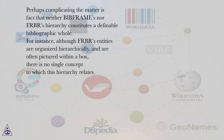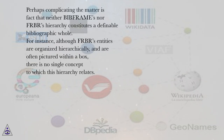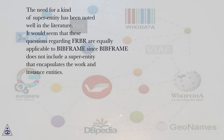Perhaps complicating the matter is the fact that neither BIBFRAME's nor FRBR's hierarchy constitutes a definable bibliographic whole. For instance, although FRBR's entities are organized hierarchically and are often pictured within a box, there is no single concept to which this hierarchy relates. The need for a kind of superentity has been noted well in the literature. It would seem that these questions regarding FRBR are equally applicable to BIBFRAME, since BIBFRAME does not include a superentity that encapsulates the work and instance entities.